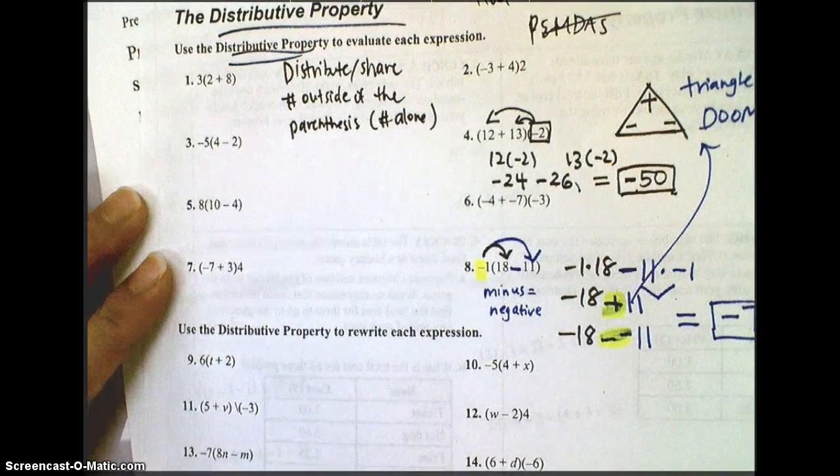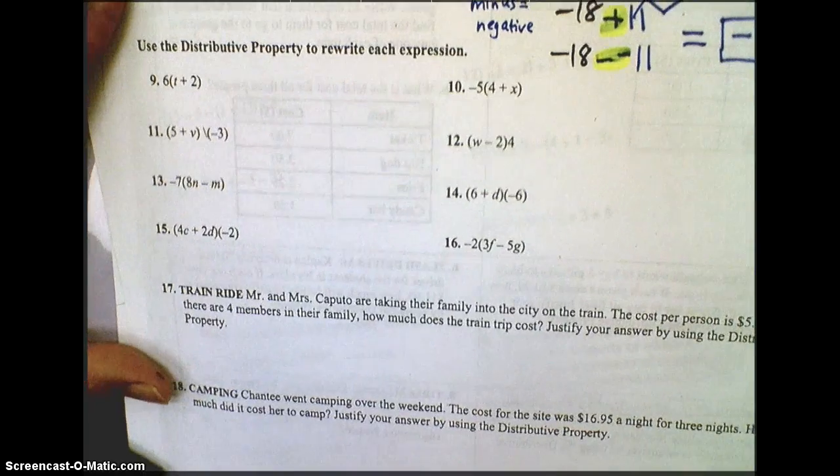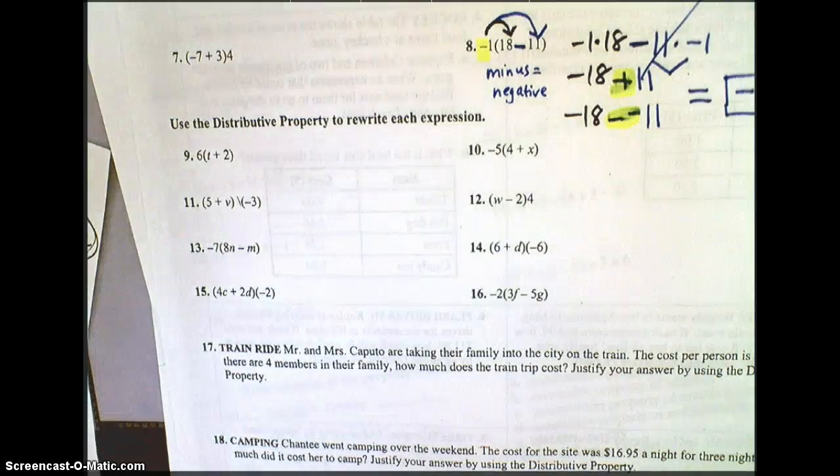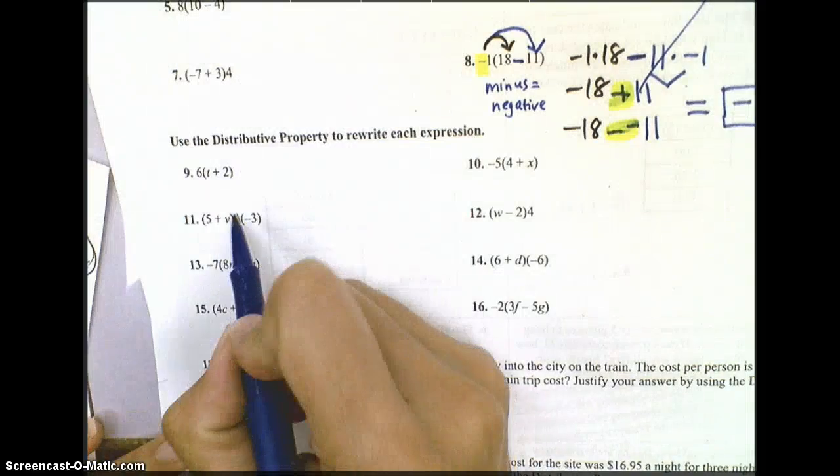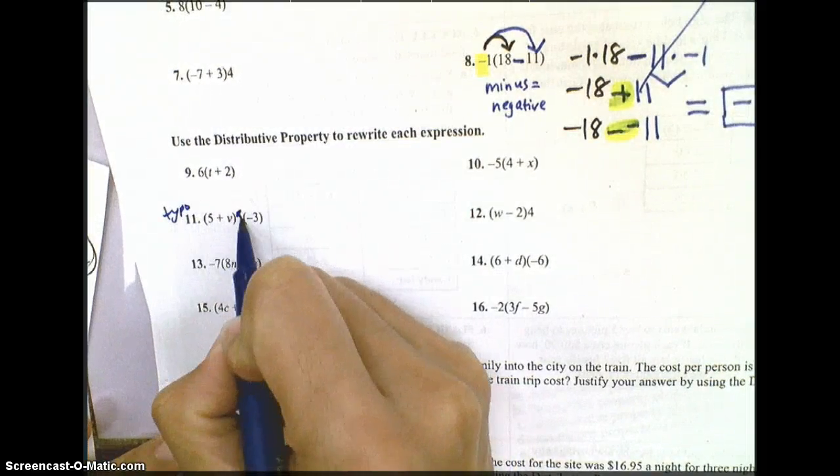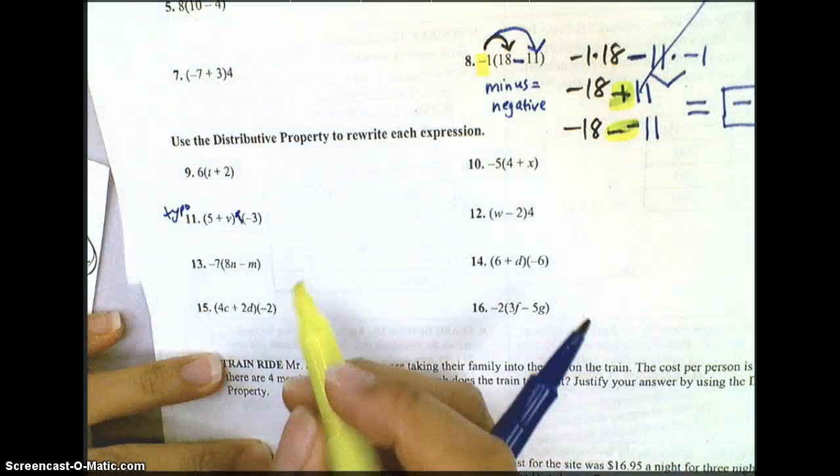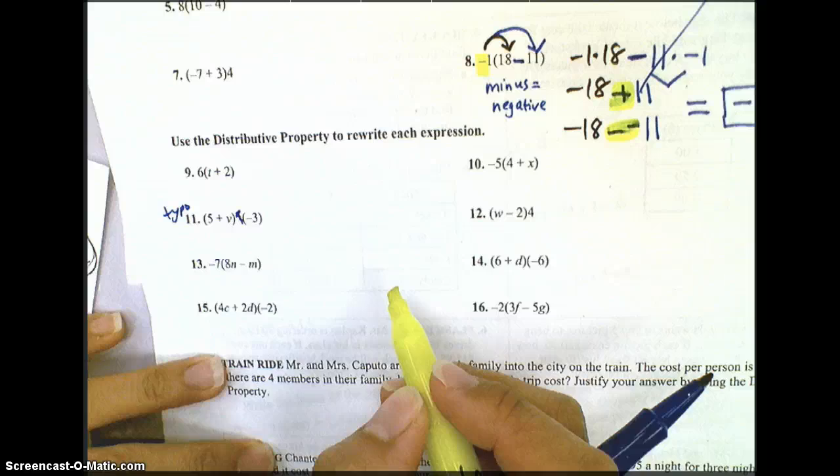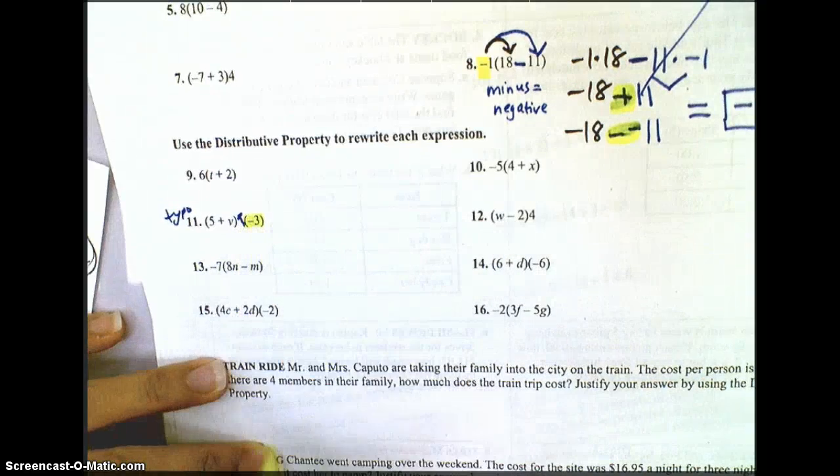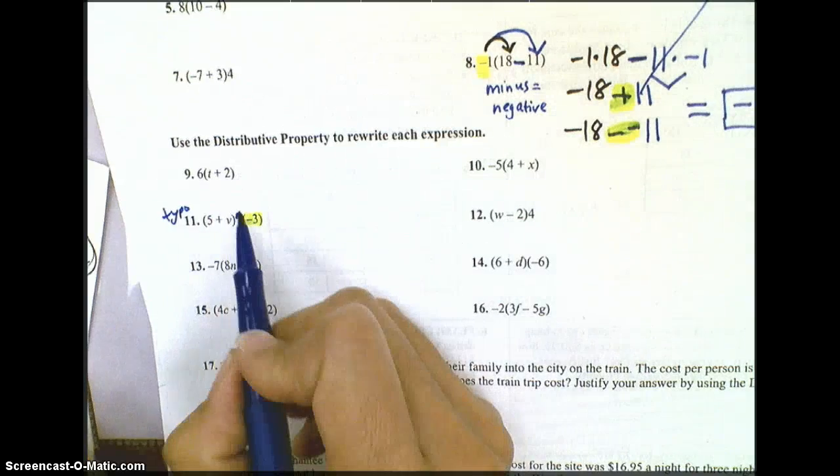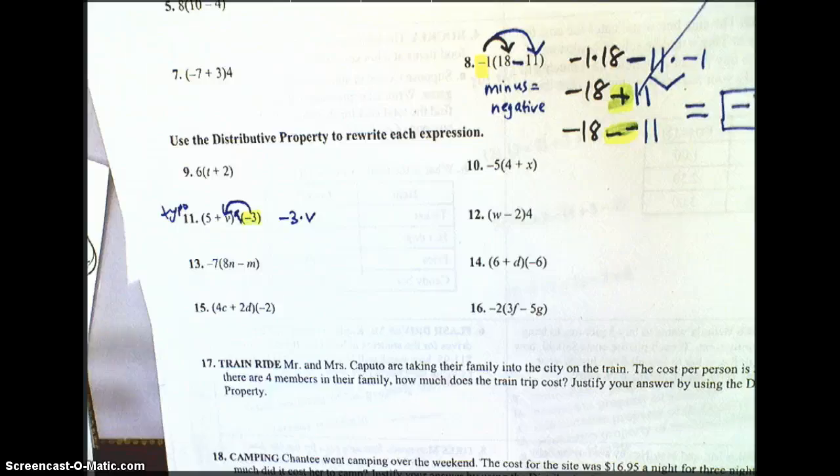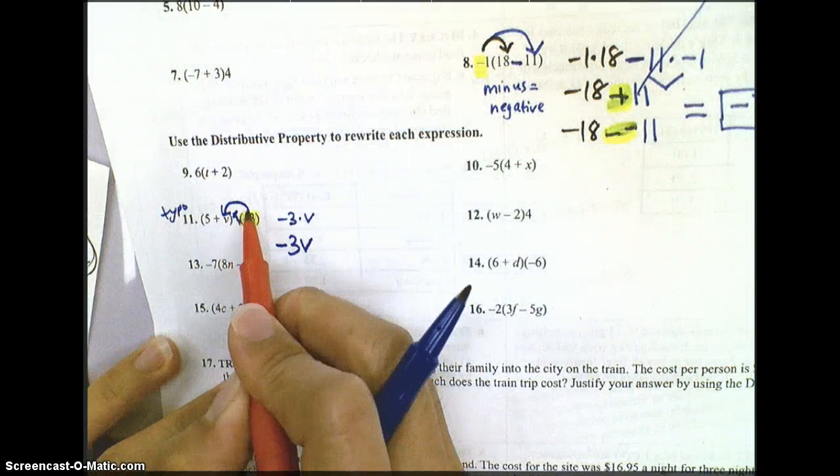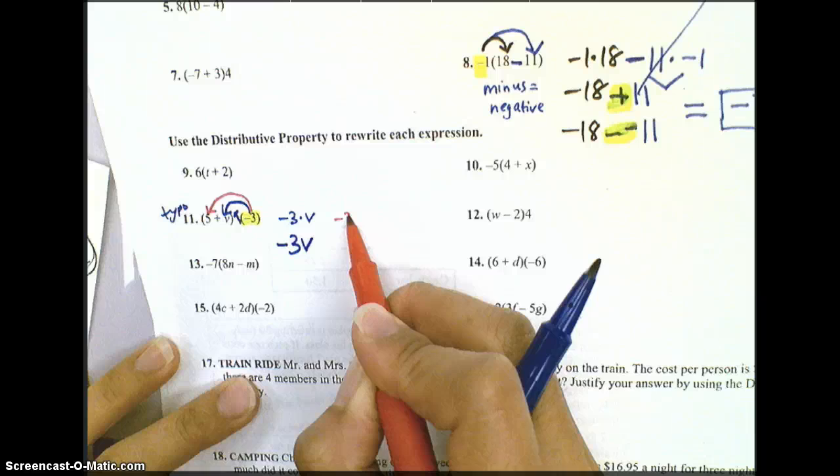Now, in 9 through 16, we're still going to use the distributive property, but this time we're going to see some variables in our parentheses. We're going to actually skip to number 11. That is a typo, so we're just going to get rid of that backslash there. The number I want to distribute is going to be the number by itself. So here, the negative 3, it's by itself in the parentheses. So I'm going to distribute negative 3 to v. So I'm going to do negative 3 times v, which gives me negative 3v. Then we're going to do negative 3 times 5.